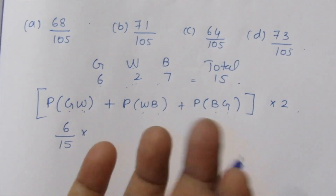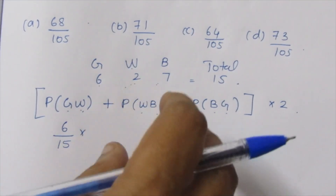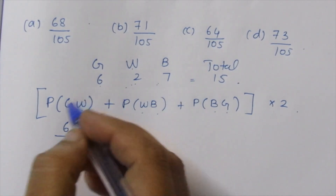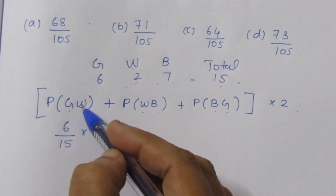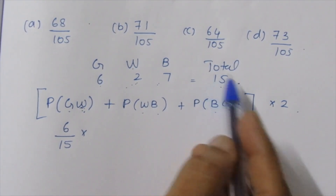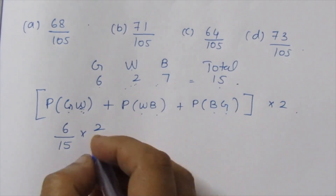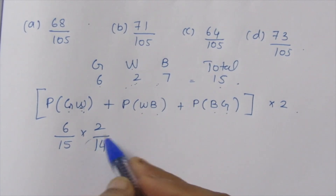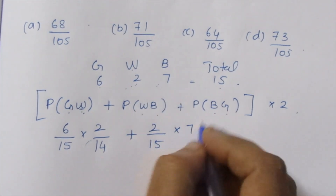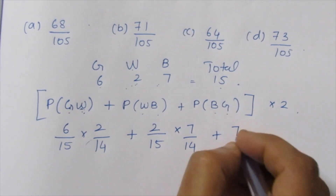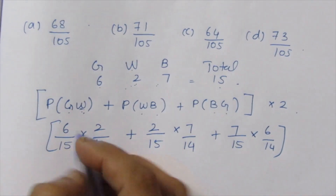Since it is simultaneous drawing, after picking the first ball (green), the second ball is chosen from the remaining. So we compute: green into white, plus white into black — for example, 7 by 15 into 2 for one combination.